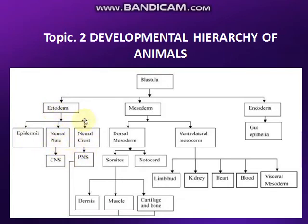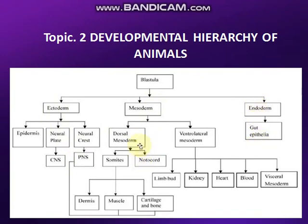Jo aapka nervous system ban jaata hai. Mesoderm aage se dorsal hai, ventral hai, somites hai, notochord bana rahi hai. Endoderm aapke paas gut epithelium hai - yani aapka poora abdominal area hota hai usko give rise kar rahi hai. Yeh poore itne zyada structures in 3 layers se ban rahe hain. Ab agar aap thoda sa dhyan karein toh ek hierarchy nazar aayegi, sequence nazar aayegi: pehle blastula, phir 3 germ layers, aur har ek germ layer apne specific organs ko give rise karti hai. So this was the basic developmental hierarchy of animals.